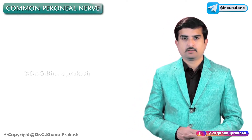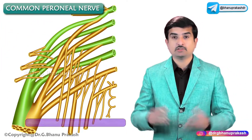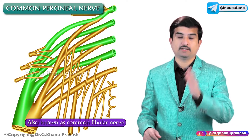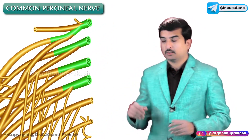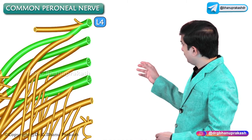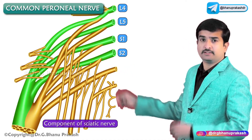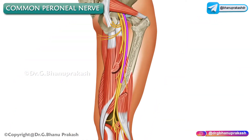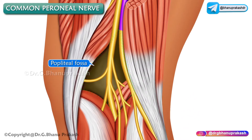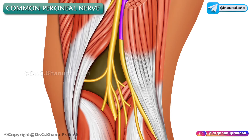The common peroneal nerve, also known as the common fibular nerve, is derived from the ventral rami of L4, L5, S1, and S2. It is a component of the sciatic nerve and arises in the lower third of the thigh, just above the popliteal fossa. After entering the popliteal fossa, it passes just beneath the edge of the biceps femoris tendon.